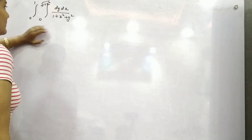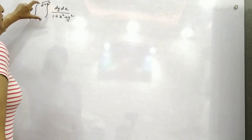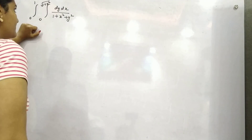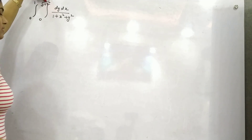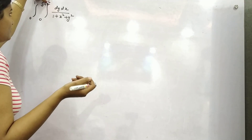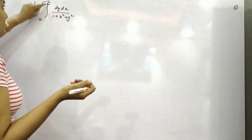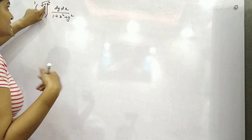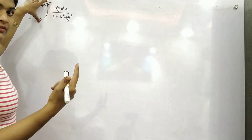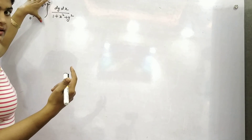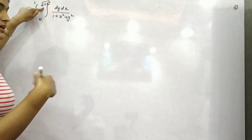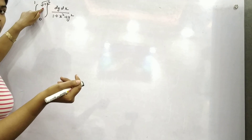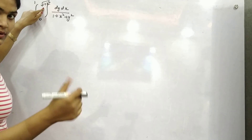You are given with this question and you have to find out double integrals for this. Now you can see that the limit consists of a variable. If it is in terms of x, that means this is the limit for the y part. And if it would be in terms of y, there would be a limit for x.